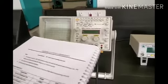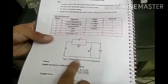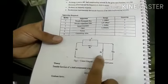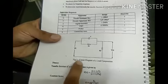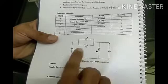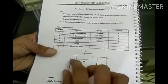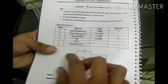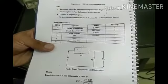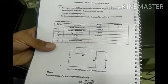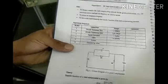This is a circuit of the RC lead compensating network. The meaning of a lead network is that the output voltage leads the input voltage — that is the meaning of the RC lead network.